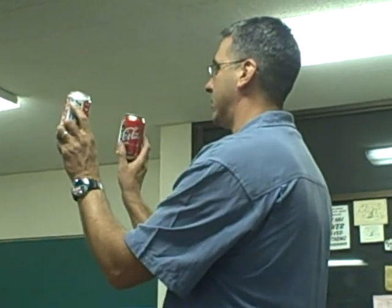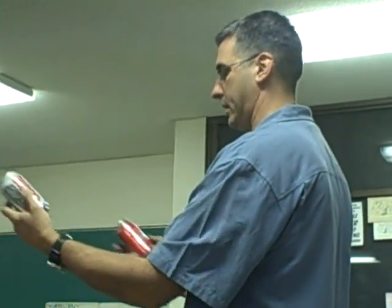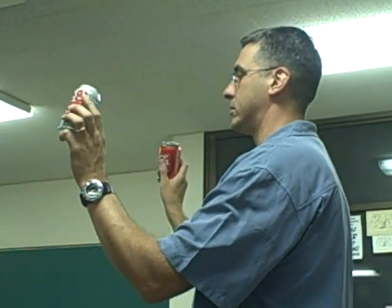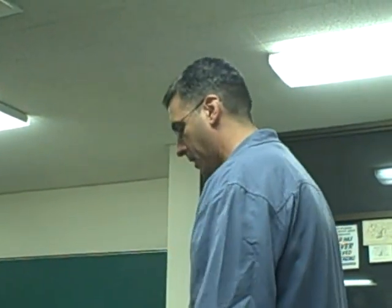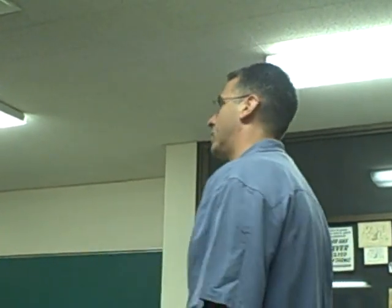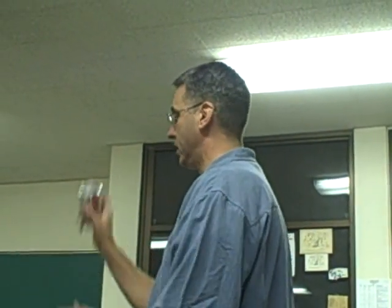We'll have two pop cans here. Their volumes are identical — what's the volume? 355 milliliters. Will the pop can and its contents have a density greater than water or less than water? Greater than. So the pop can will sink in water.